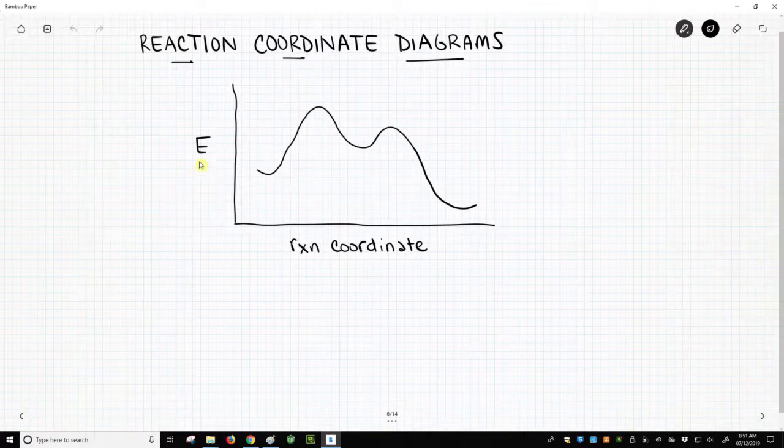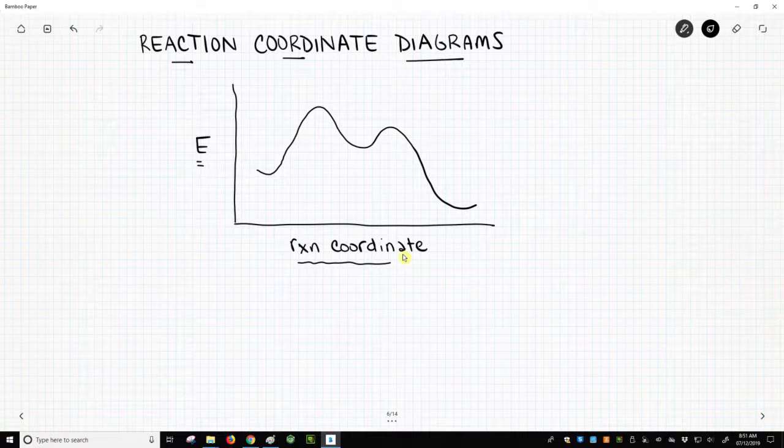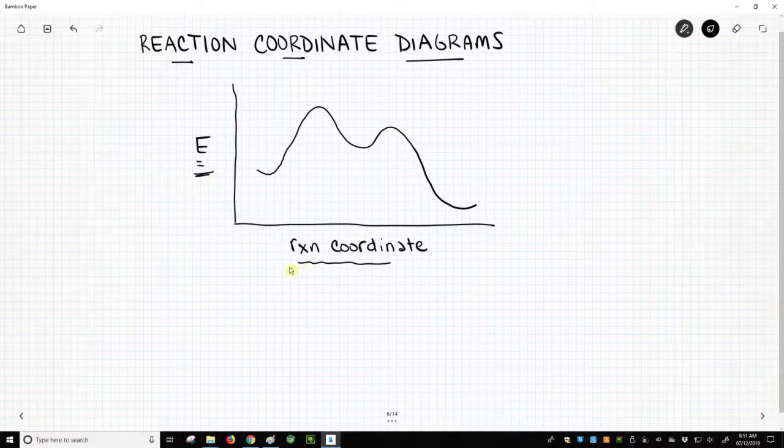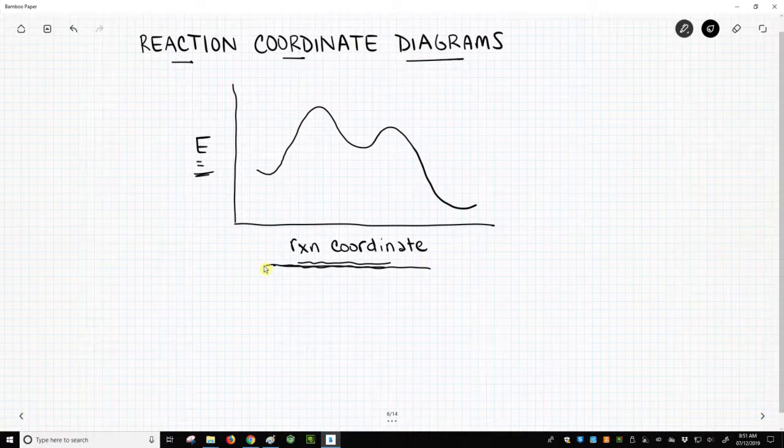So we have an energy axis, that's our y-axis, and our x-axis is something called the reaction coordinate. Sometimes people will label it the extent of reaction. This is what's happening energetically to our system as the reaction progresses. I kind of think of this as watching a movie. This is almost like a time axis as the reaction progresses.